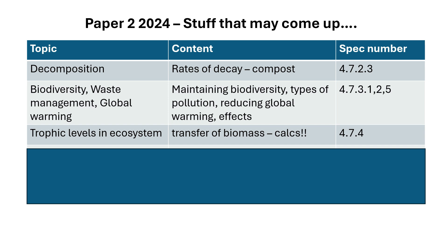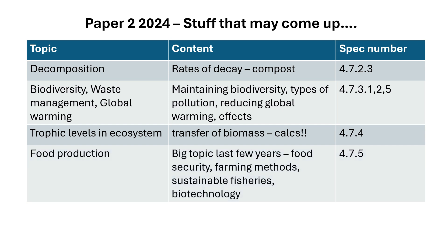Trophic levels and ecosystems — that's pyramids of biomass. There was a question on that last year, but can you do a calculation to show percentage change in transfers of biomass? And then food production — a big topic the last few years. They haven't really talked about sustainable fisheries much. Biotechnology: GM, genetic modifications, farming methods, and food security.